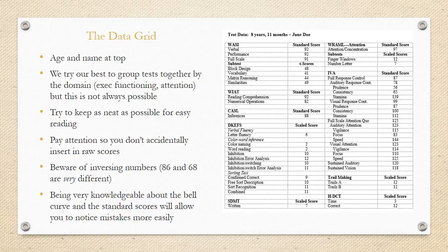This will just be a very brief introduction to the data grid. You're going to get much more specific training of exactly what to do. But as a brief glimpse, what we've got is typically the age and name at the top, and we try to do our best to group the test together by the domain that's being tested. Executive functioning, attention, all those sorts of things. But it's not always possible. You try to keep it as neat as possible for easy reading, and you pay attention so that you don't accidentally insert the wrong thing like raw scores. It's also very easy to inverse numbers, but we got to understand an 86 and a 68 are very different from each other, and we don't want to report the wrong thing. Being very knowledgeable about the bell curve and the standard scores will allow you to notice mistakes more easily.